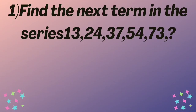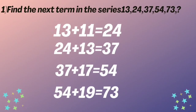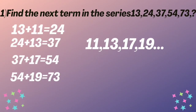Pause the video and try to find the answer. In this series, 13 plus 11 is 24, 24 plus 13 is 37, 37 plus 17 is 54, and 54 plus 19 is 73. The numbers 11, 13, 17, and 19 are consecutive prime numbers. So what they are doing in this series is adding consecutive prime numbers starting from 11 to get each consecutive term.